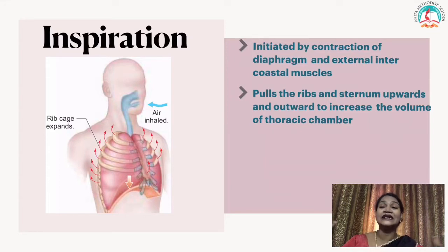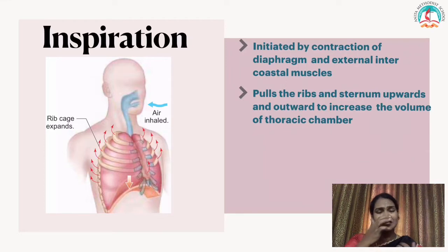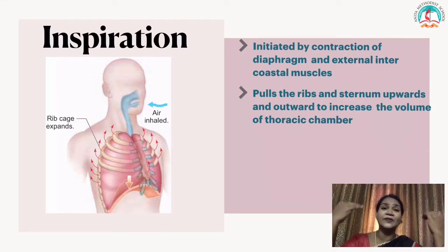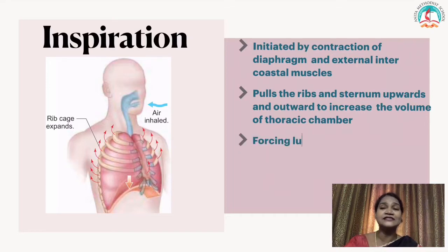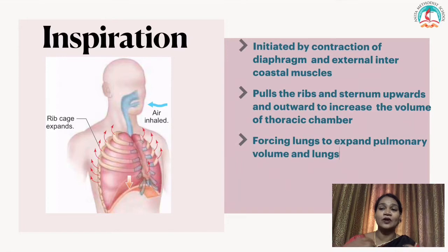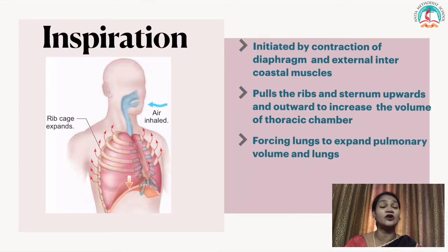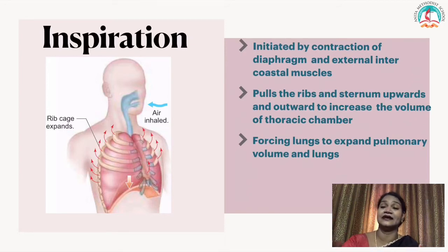The increase in thoracic volume forces the lungs to expand. Once the cavity is expanded, it allows the lungs to expand — increasing the pulmonary volume — so the air can come in and reach the lungs.